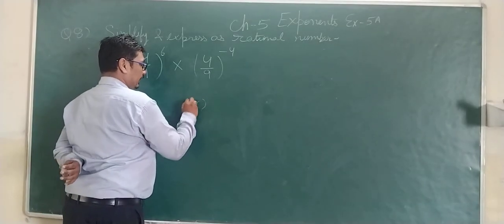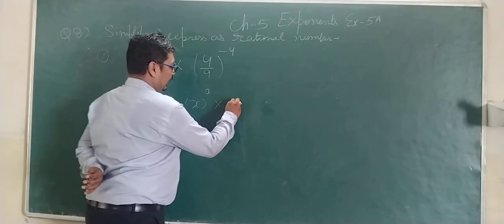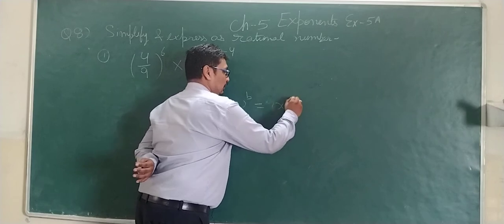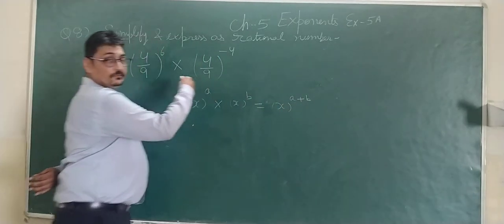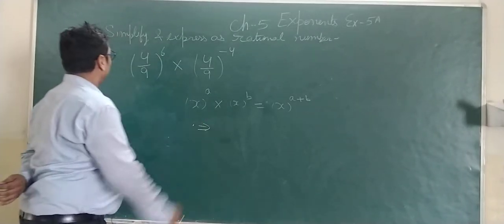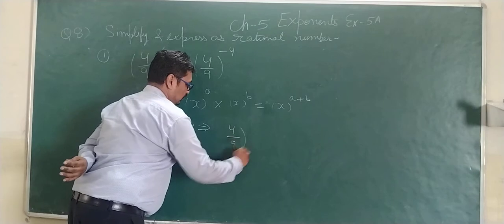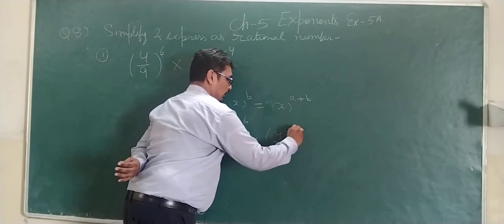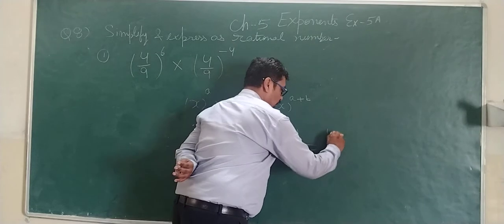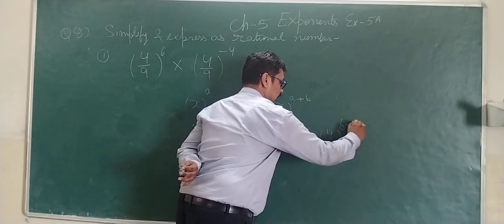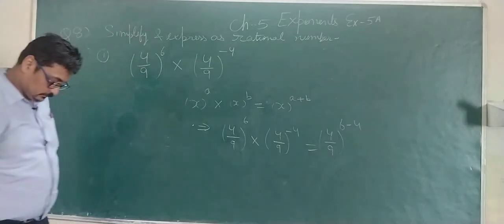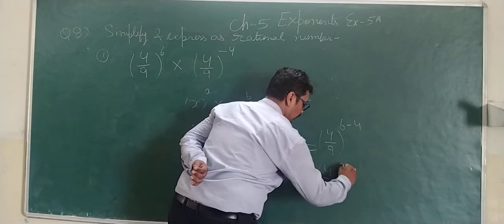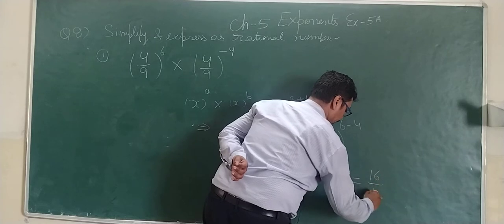We know x having power a multiplied by x having power b can be written as x having power a plus b. Similarly, we can write it as 4 upon 9 power 6 multiplied by 4 upon 9 power minus 4, which becomes 4 upon 9 to the power 6 minus 4. This can be written as 4 upon 9 whole square, or 16 upon 81.